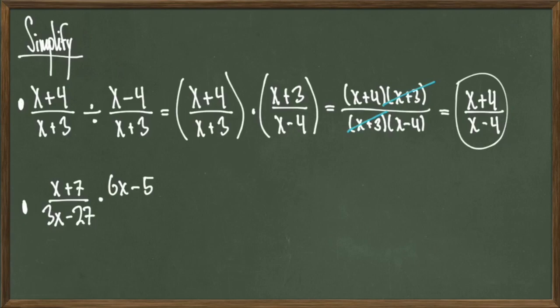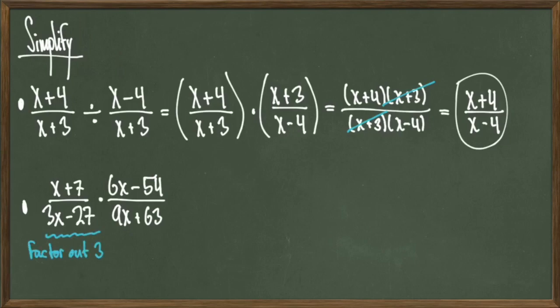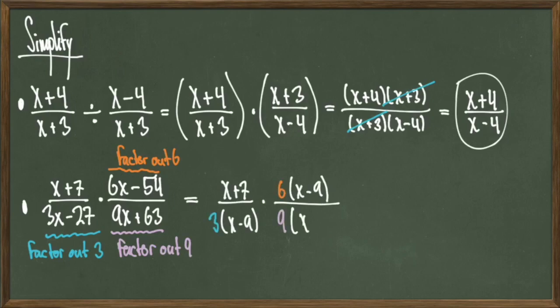Next we're going to look at x plus 7 over 3x minus 27 times 6x minus 54 over 9x plus 63. We're going to first start by looking at the individual fractions and the numerators and denominators thereof. x plus 7 can't simplify any further, so we can leave it alone. However, 3x minus 27 has a common factor of 3 in each term, so we can factor out a 3. Looking at 6x minus 54, we see that we can factor out a 6. And then looking at 9x plus 63, we see that we can factor out a 9. Once we factor all these terms out, we get x plus 7 over 3 times x minus 9 times the quantity 6 times x minus 9 over 9 times x plus 7.